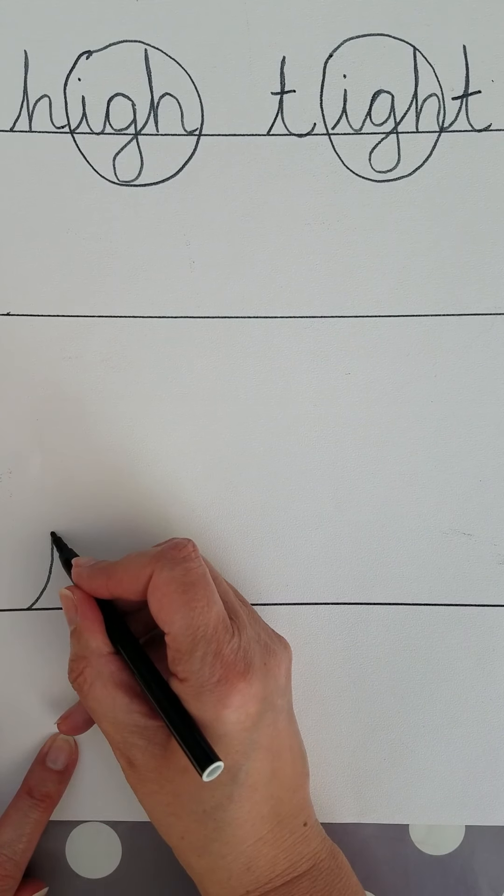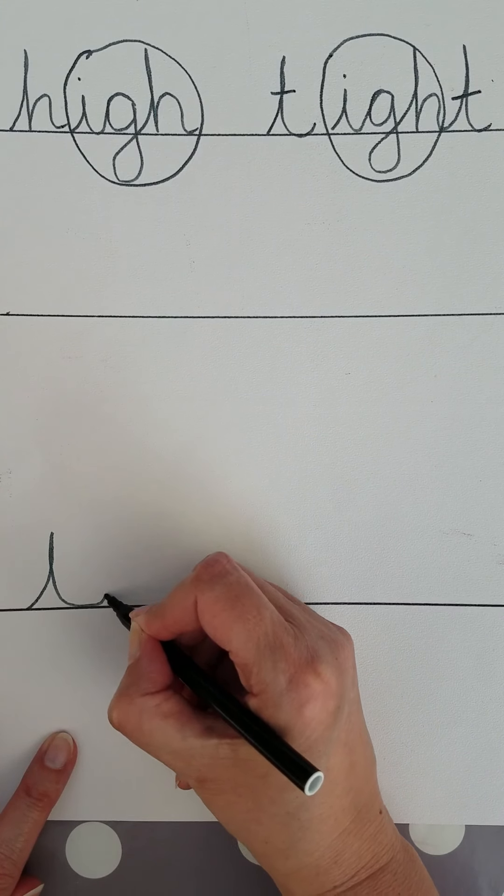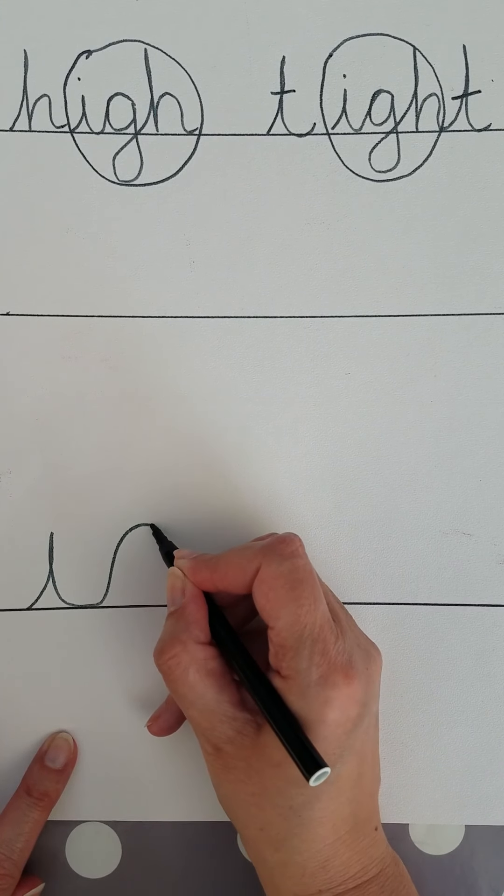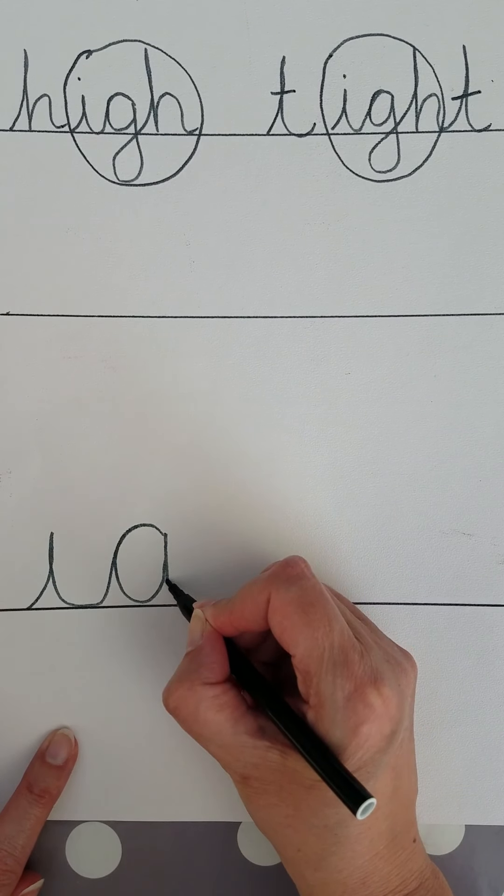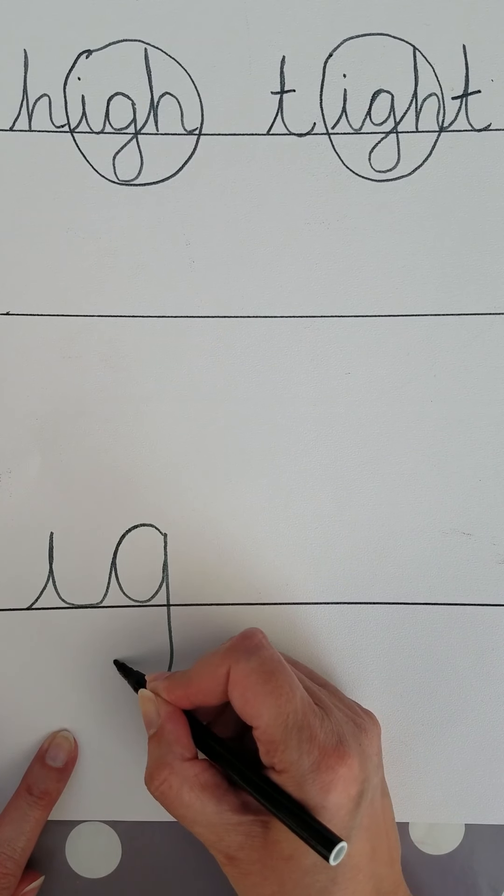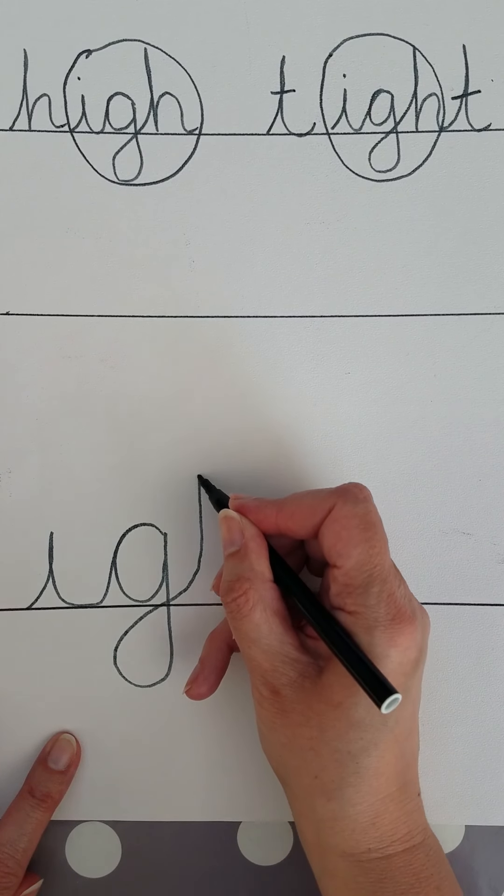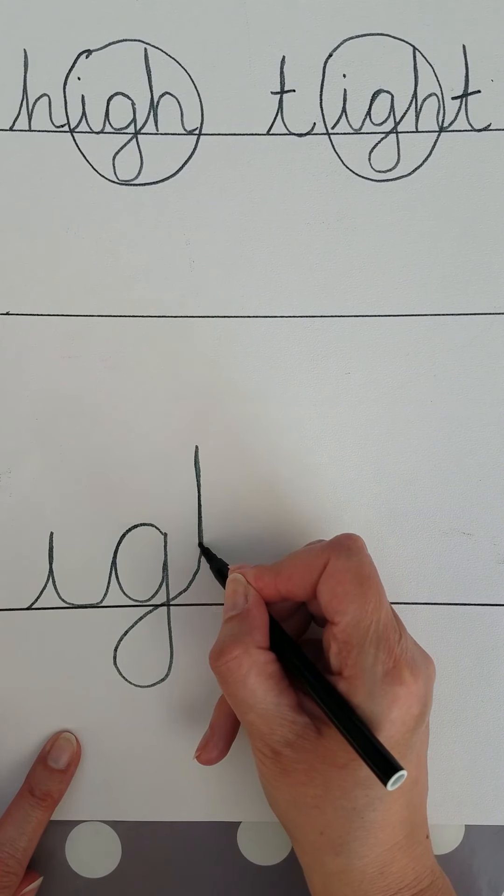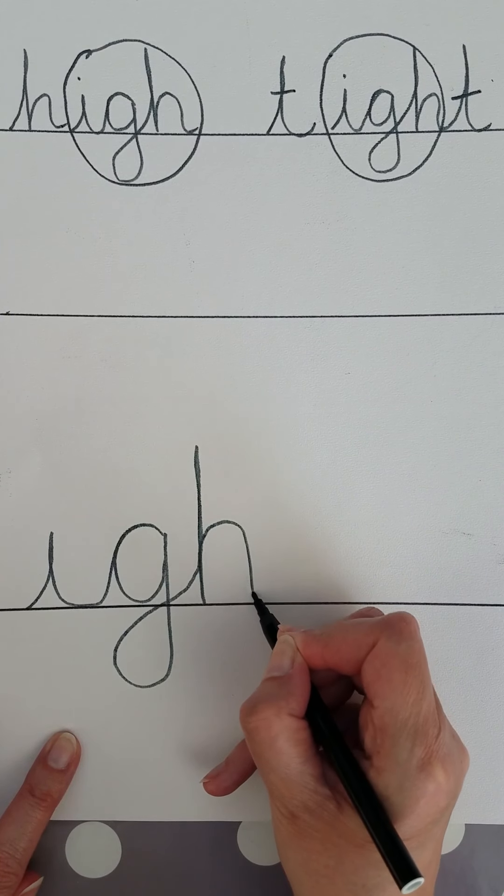We're going to go up and down for the I, up and over for the G, round, down as if it was an A, but we're not going to curl. We're going to go straight down, round, and carry on round, and come up, up, down, and up and over like a tunnel, and curl.